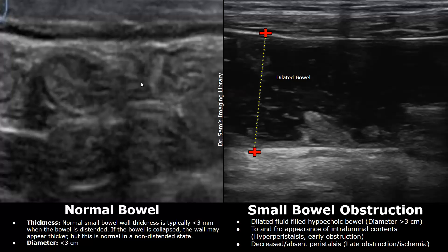When the bowel is not distended, the wall may appear thicker, but this is normal in a non-distended bowel. The normal diameter of the bowel is less than three centimeters. The image on the right is a case of small bowel obstruction — you can see a dilated hypoechoic fluid-filled bowel with a diameter of more than three centimeters.